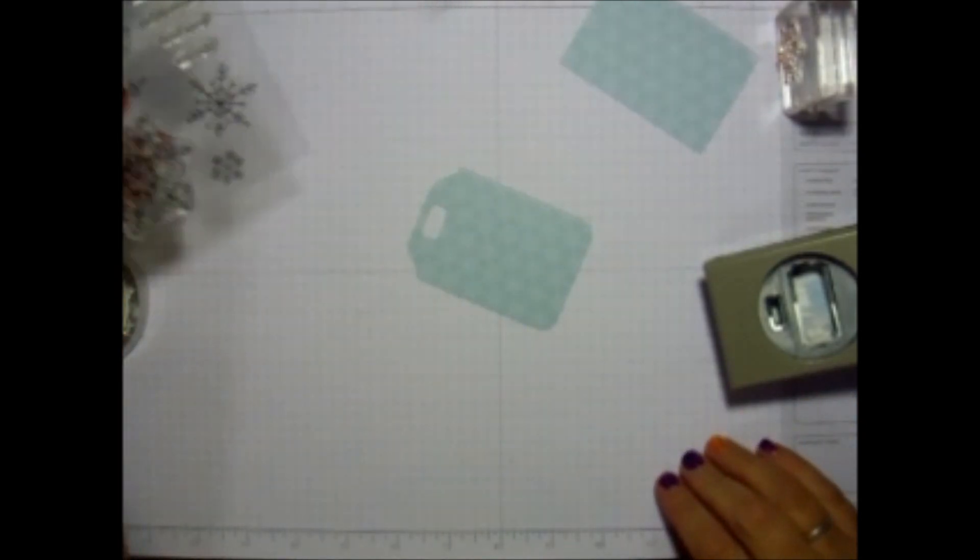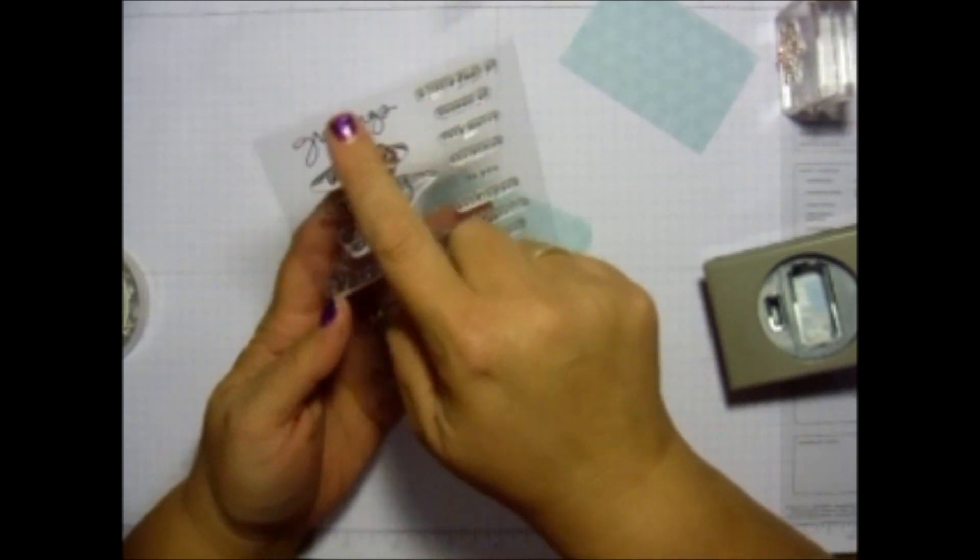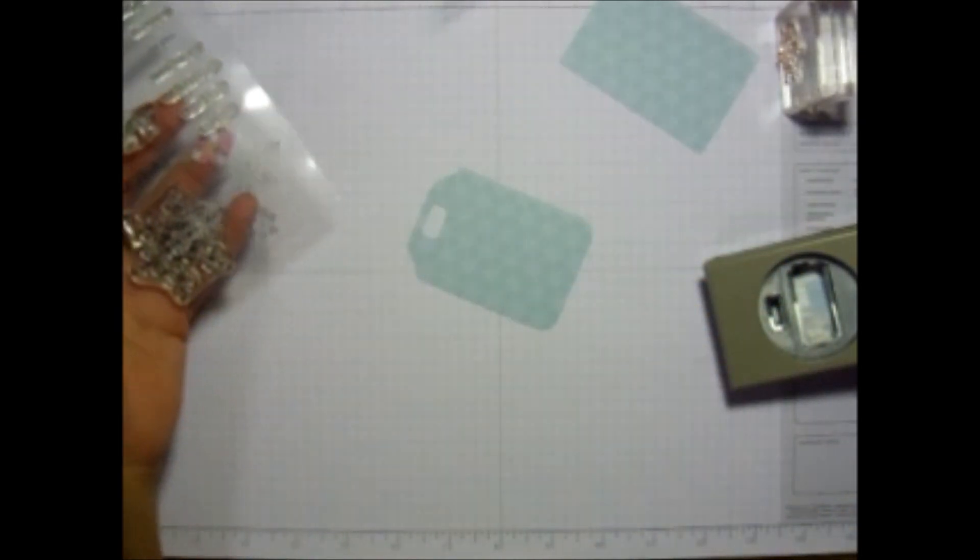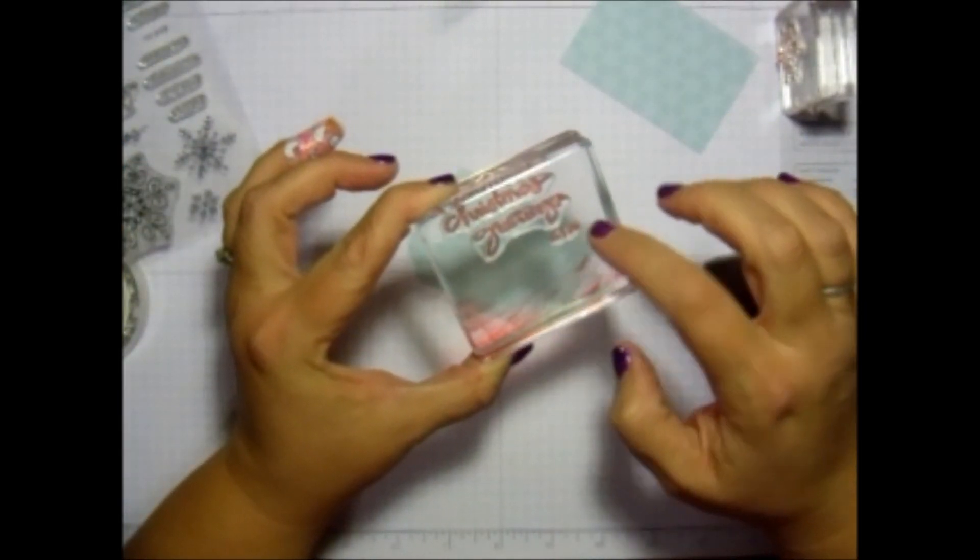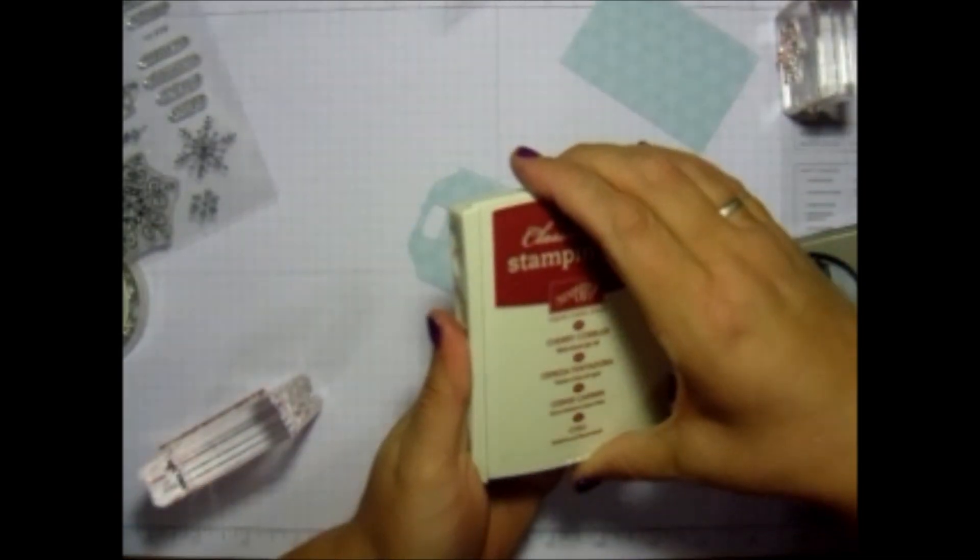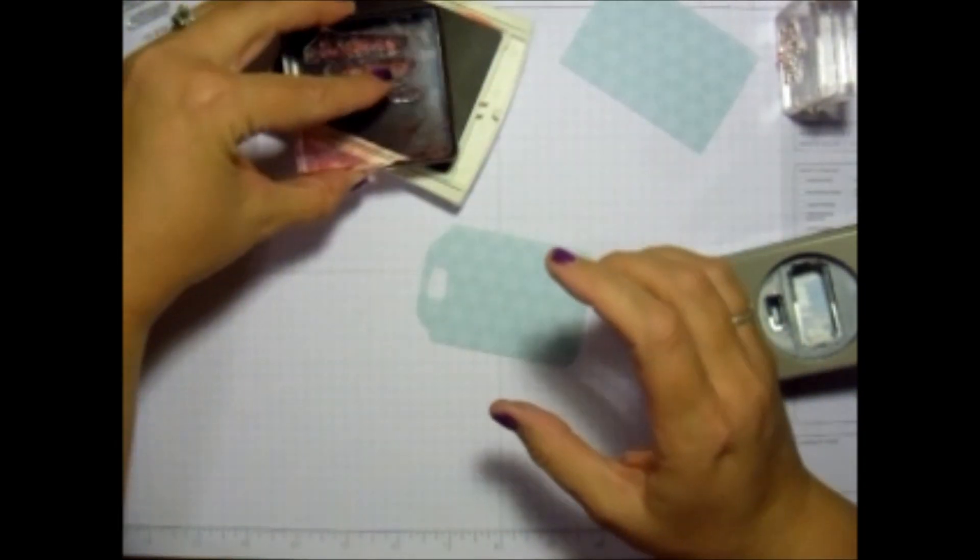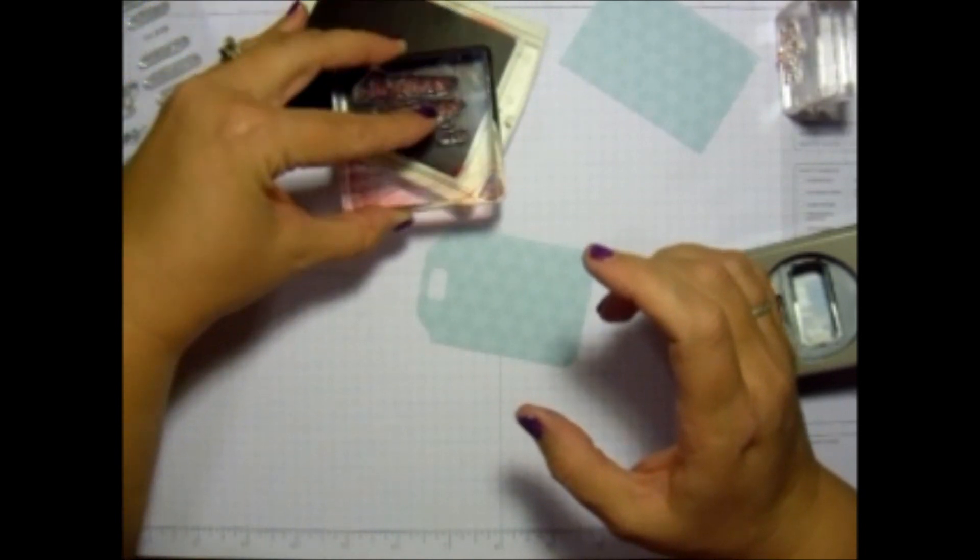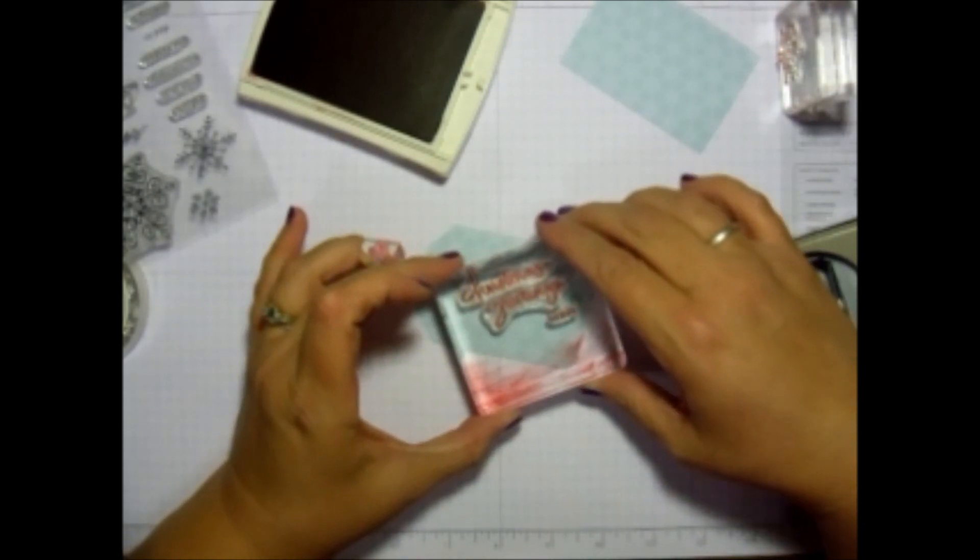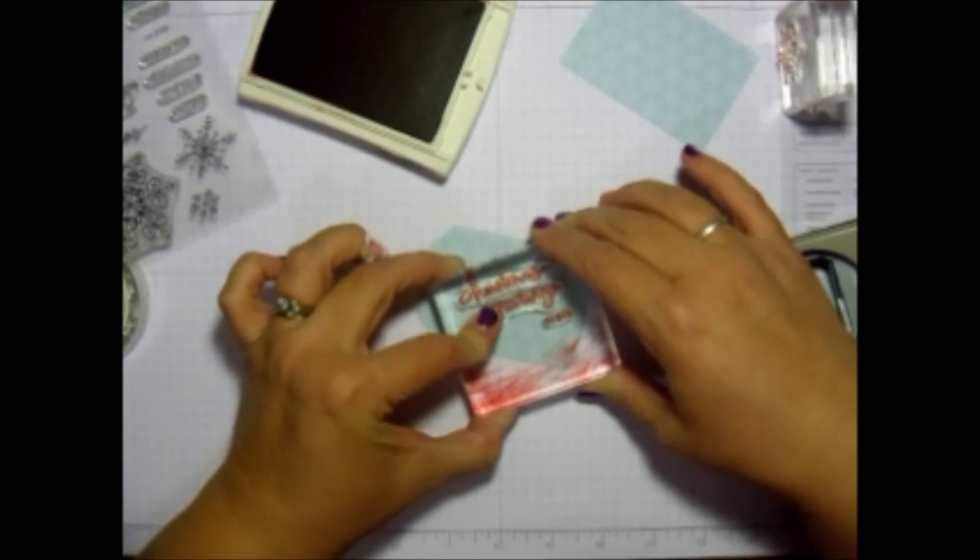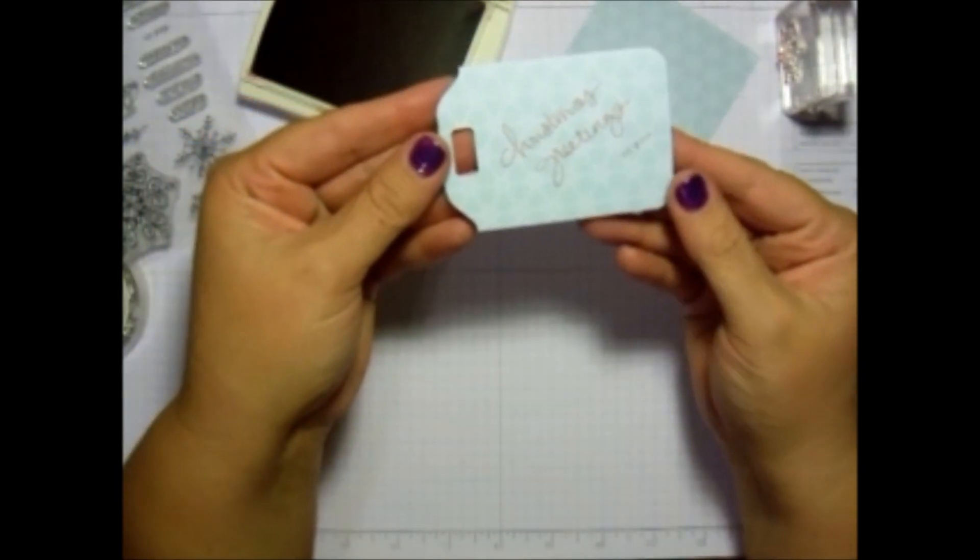So then what I did is I took this stamp set here. And I'm going to use Christmas greetings to you. So I lined those up on here where it says Christmas greetings to you. Then I'm going to take my Cherry Cobbler ink. And I'm going to go ahead and ink that up nice and good here. And I'm going to put it kind of at an angle. And you could be done if you wanted to there.